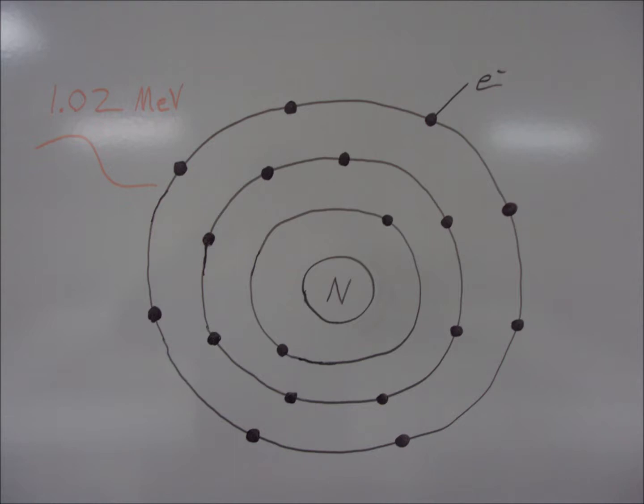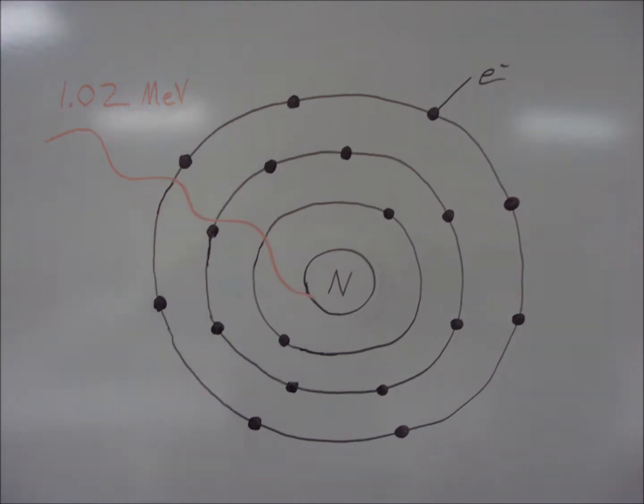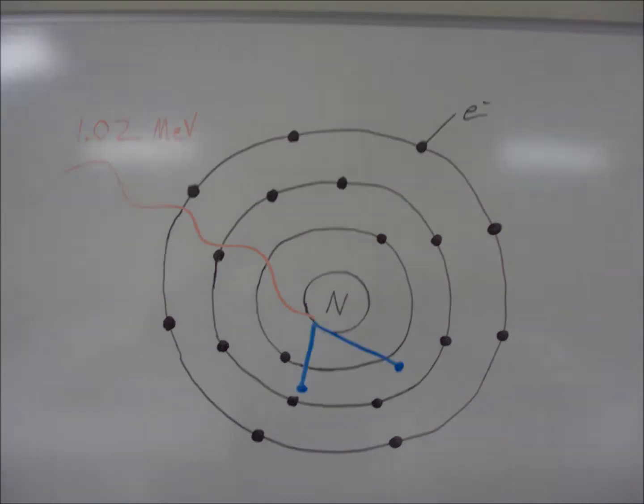So here we have our high energy photon, which is a high frequency, high energy gamma ray with the energy of at least 1.02 mega electron volts. Here you can see the interaction as the nucleus has to give off the accumulation of new energy in the form of two new subatomic particles.